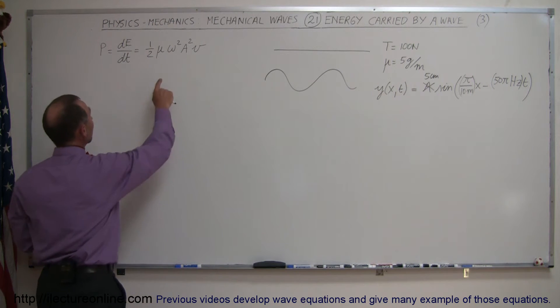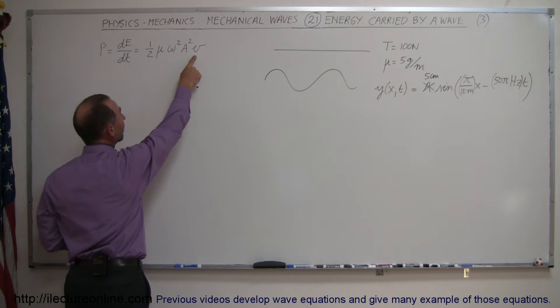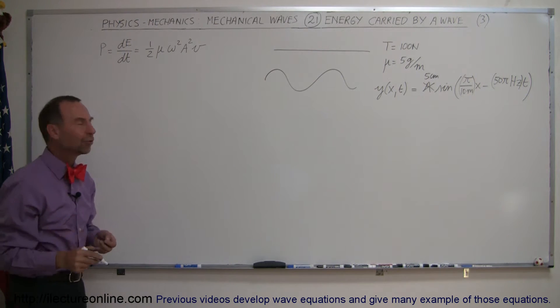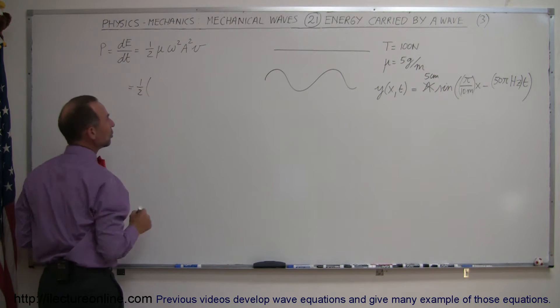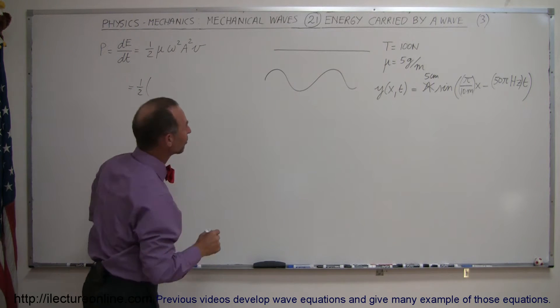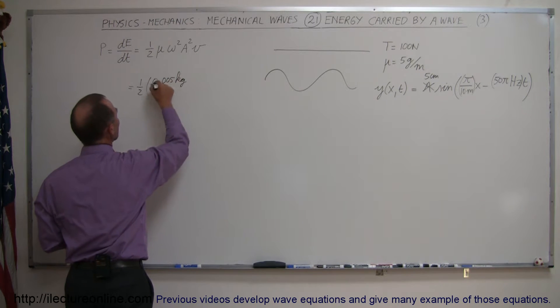Notice, to calculate that, we need to have the mass per unit length, which we have. We need to have the angular frequency, the amplitude, and the velocity. So let's see if we have those things. So this is equal to one half times mu. And mu would be 5 grams per meter, which is 0.005 kilograms per meter.